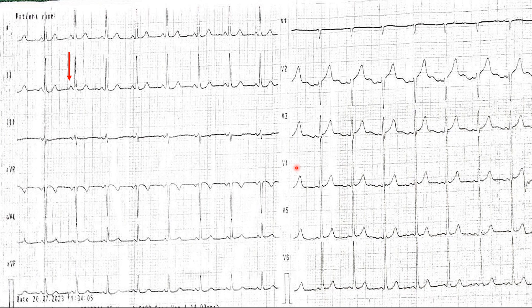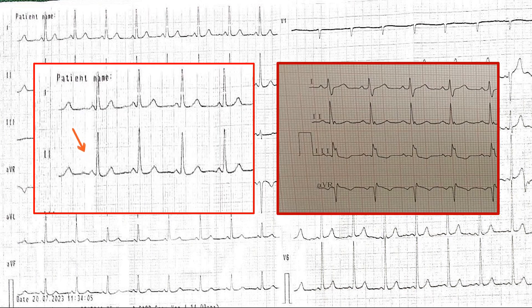Now what is the important and interesting finding on the ECG? I have zoomed in on the important findings for this patient. On the left-hand side, the arrow is pointing towards that finding — this is a short PR interval. Look at the leads: the P wave is just finishing and the QRS is starting. On the right-hand side, the PR interval appears to be a normal PR interval, and the P wave is classically separate from the QRS complex. This is not the case on the left side.